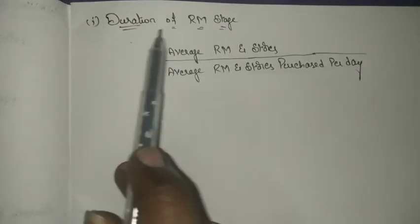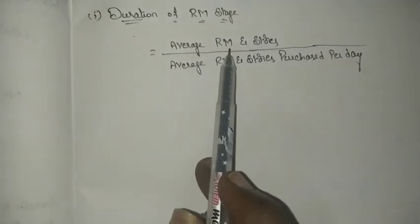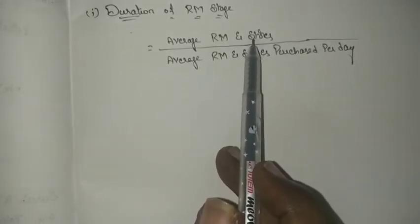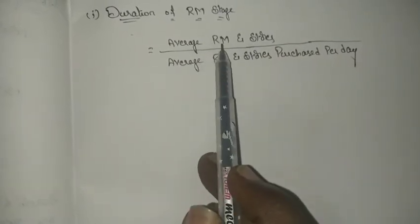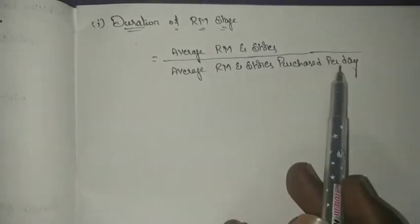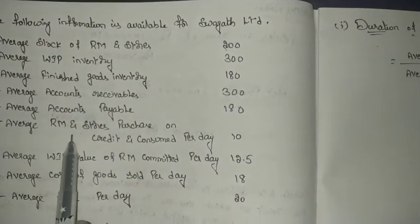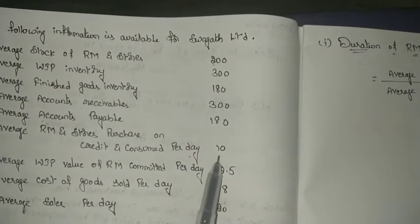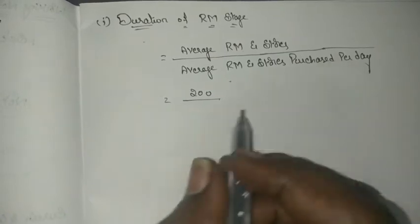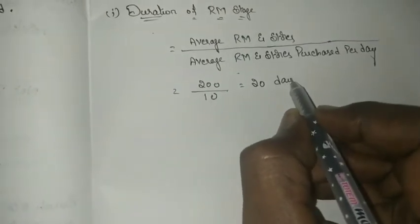The first thing is duration of raw material stage. The formula is: average raw materials and stores divided by average raw materials and stores purchased per day. In this problem, raw materials and stores are given together, so we take both together. Average stock of raw materials and stores is 200, and average raw materials purchased per day is 10. So 200 divided by 10 gives a duration of raw materials of 20 days.